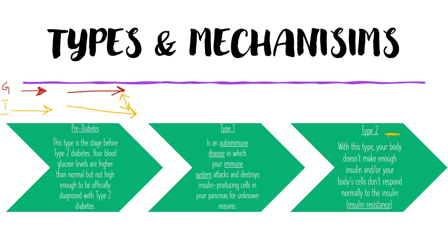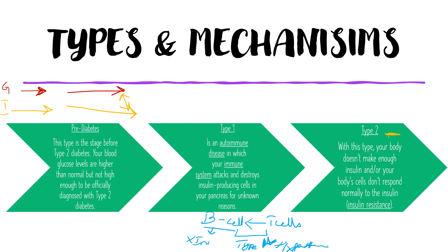In type 1 diabetes, there is an autoimmune process in which the body's immune cells or the immune system attacks and destroys the insulin-producing cells of the pancreas. The beta cells in the pancreas produce insulin, and they are attacked by the T cells of the body. This is a type 4 hypersensitivity reaction. When this happens, there is no insulin produced inside the body.